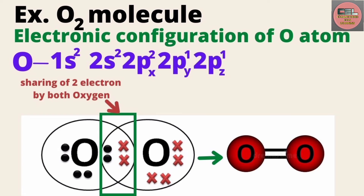Now look at the oxygen molecule. In the oxygen molecule, the electronic configuration is 1s², 2s², 2px², 2py¹, 2pz¹. The 2p sub-shell has 3 orbitals with 4 electrons distributed as: x orbital has 2 electrons, y has 1, z has 1. In this condition, the 2px orbital will not participate in bond formation because it is completely filled.